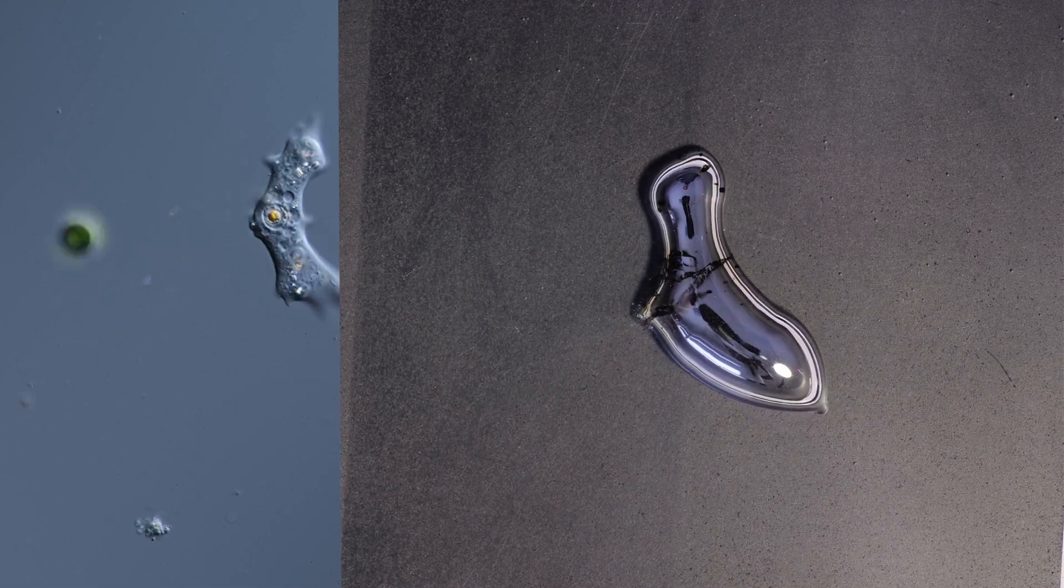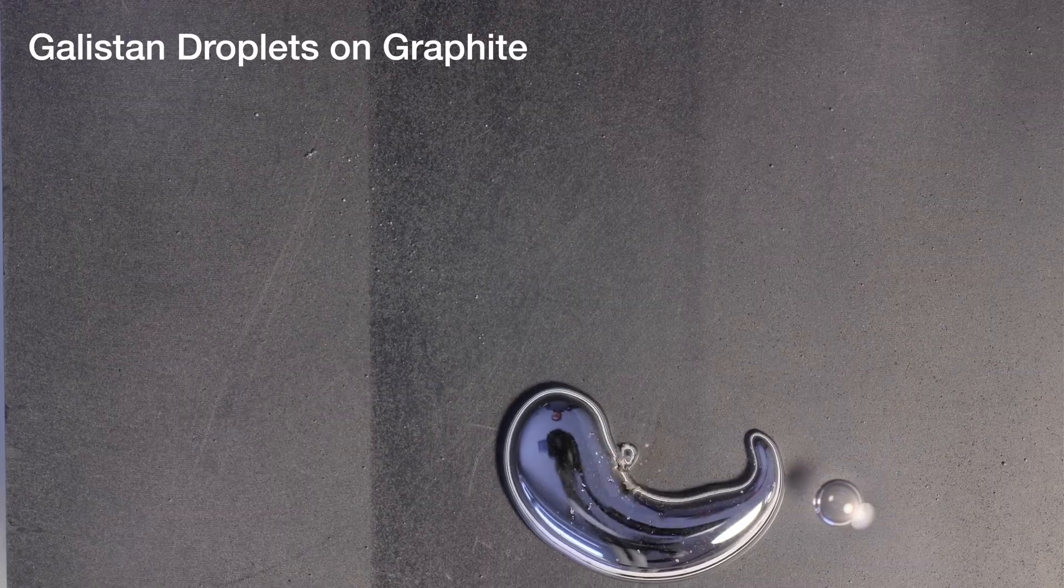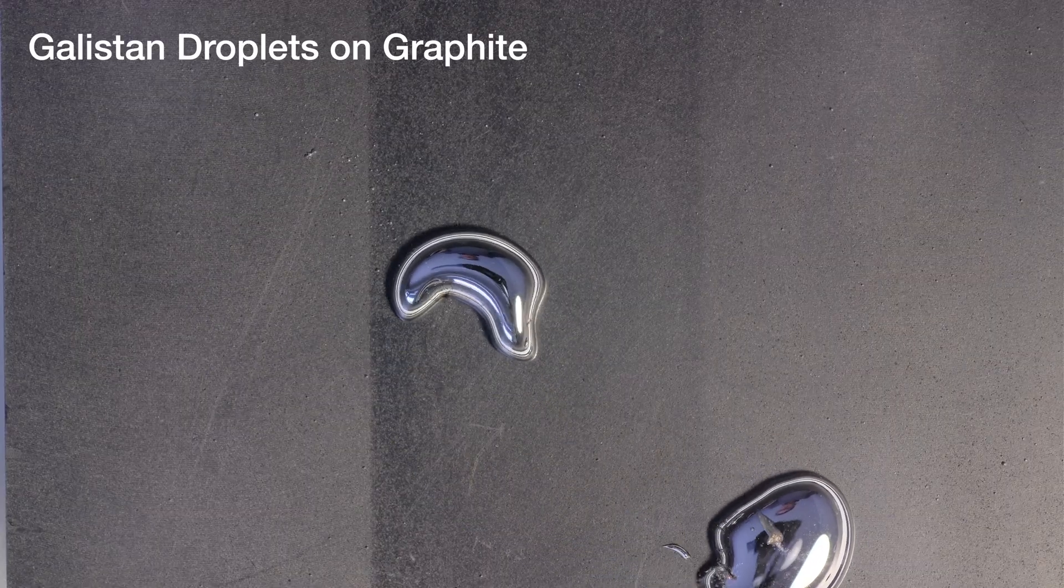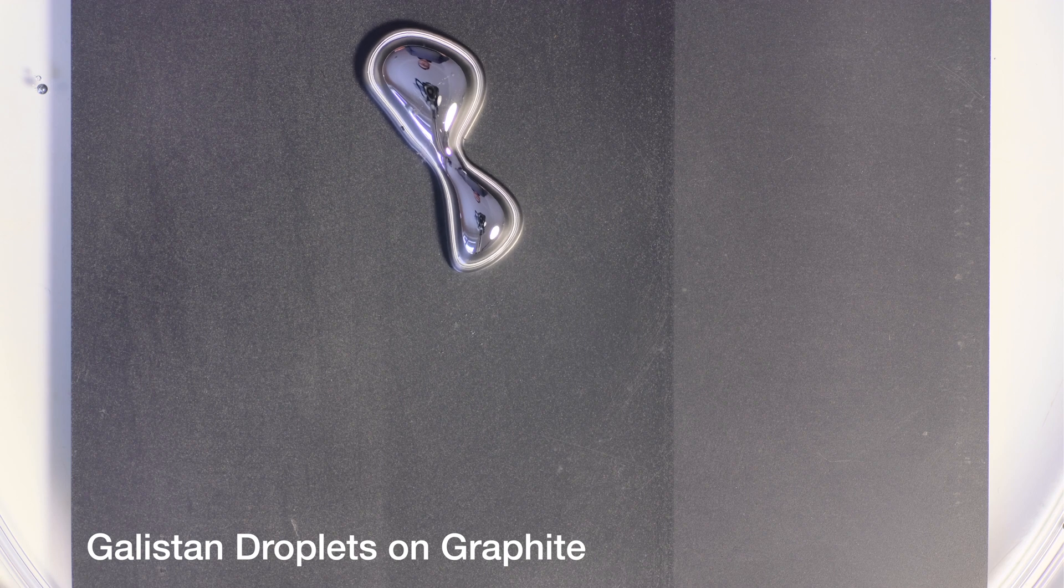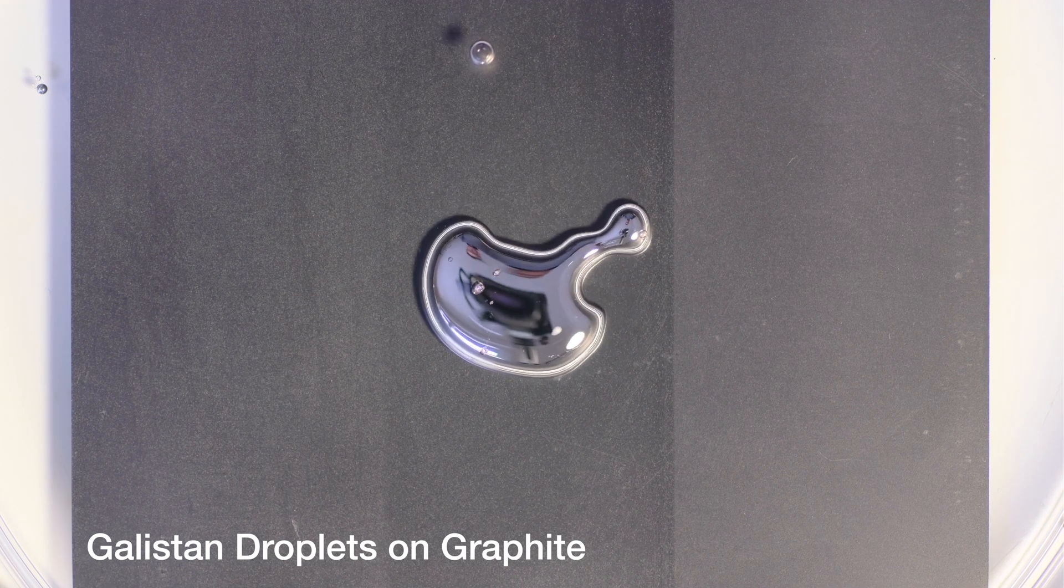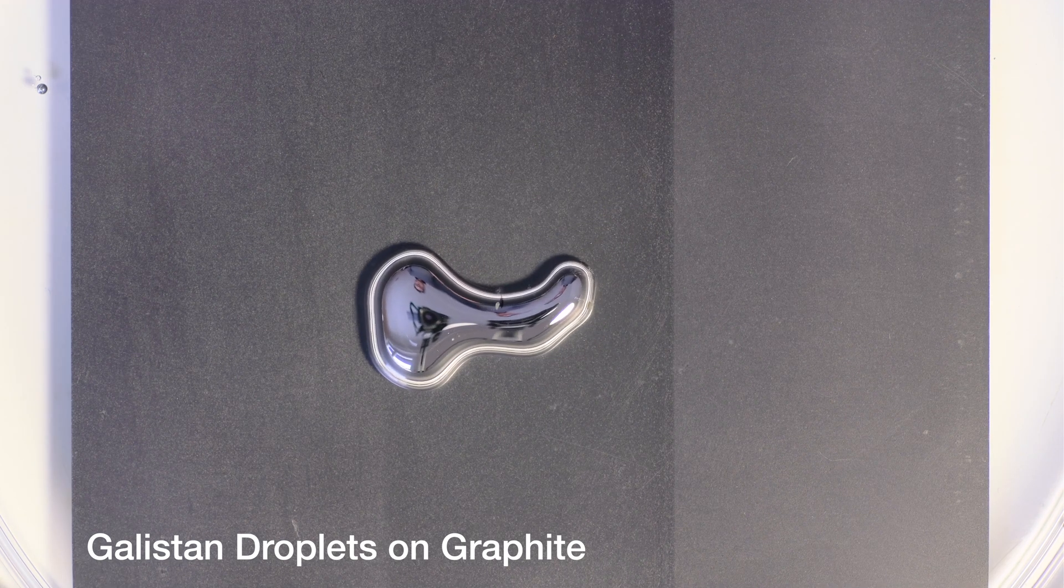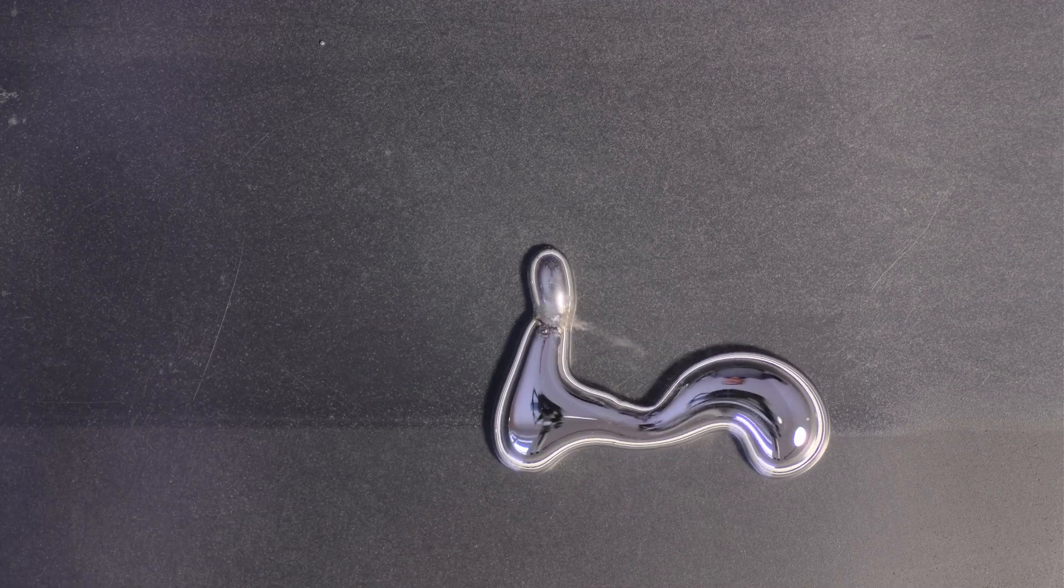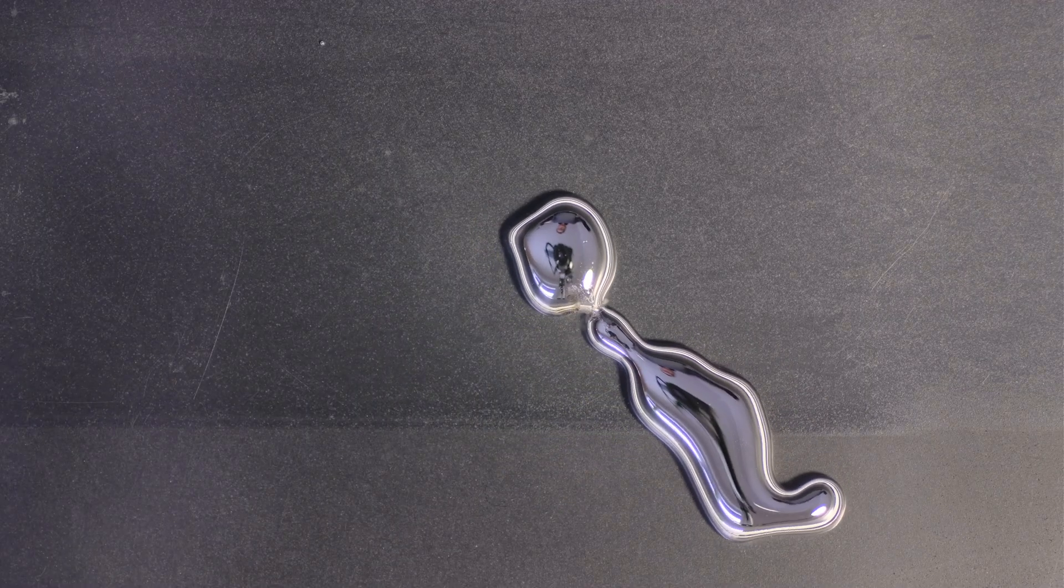The metal droplets are just a few millimeters in size and move on a graphite plate immersed in an alkaline electrolyte. This chemical reaction is one of the very few, if not the only one, that is able to imitate the peculiar locomotion found in amoebas.